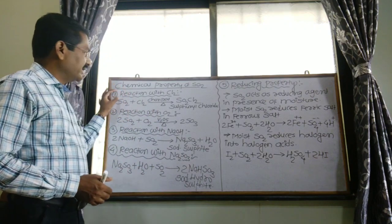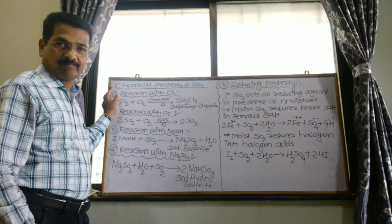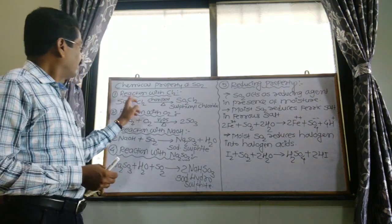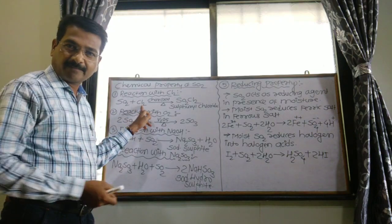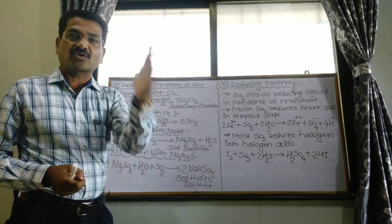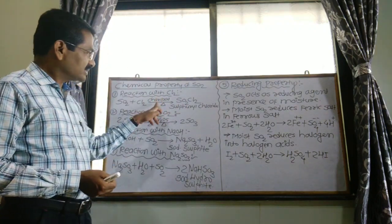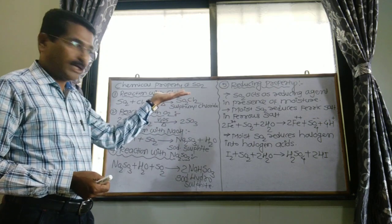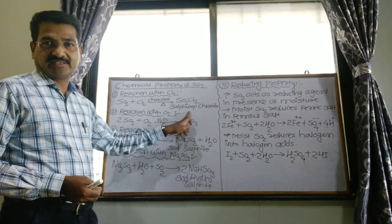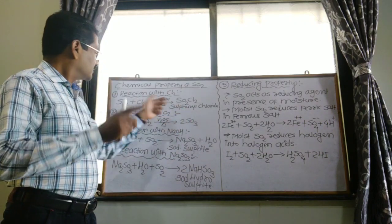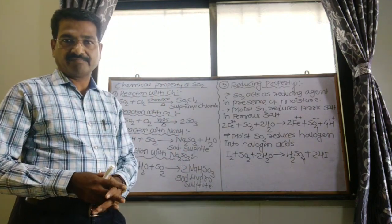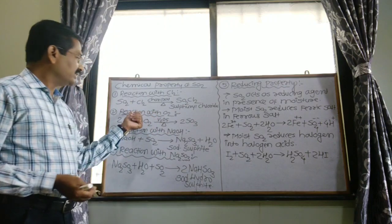First chemical property: that is the reaction with chlorine. When Cl2, that is chlorine, reacts with sulfur dioxide in the presence of charcoal at high temperature, it produces SO2Cl2, called sulfuryl chloride. Chlorine reacts with sulfur dioxide to form sulfuryl chloride — this is the first chemical property.